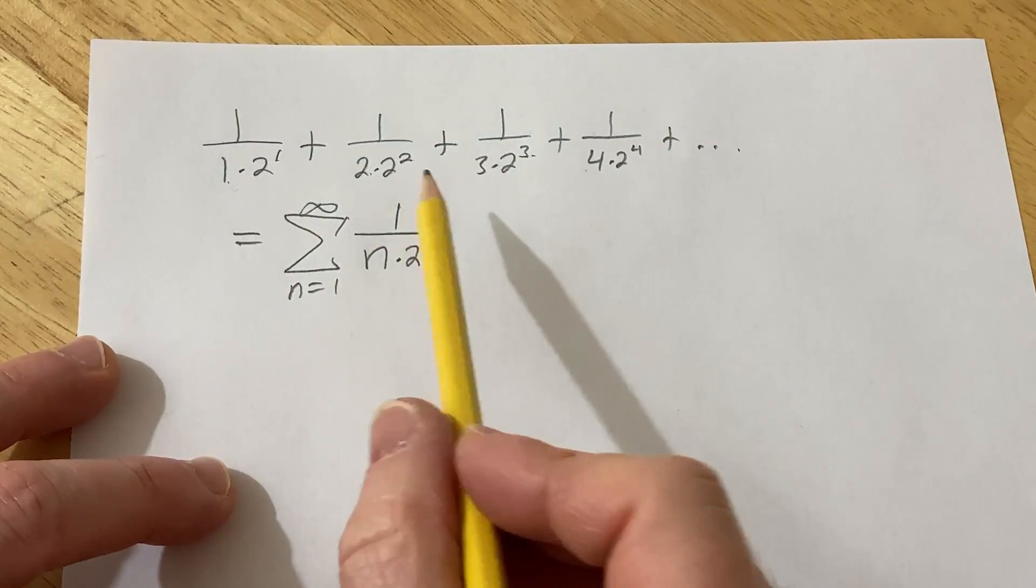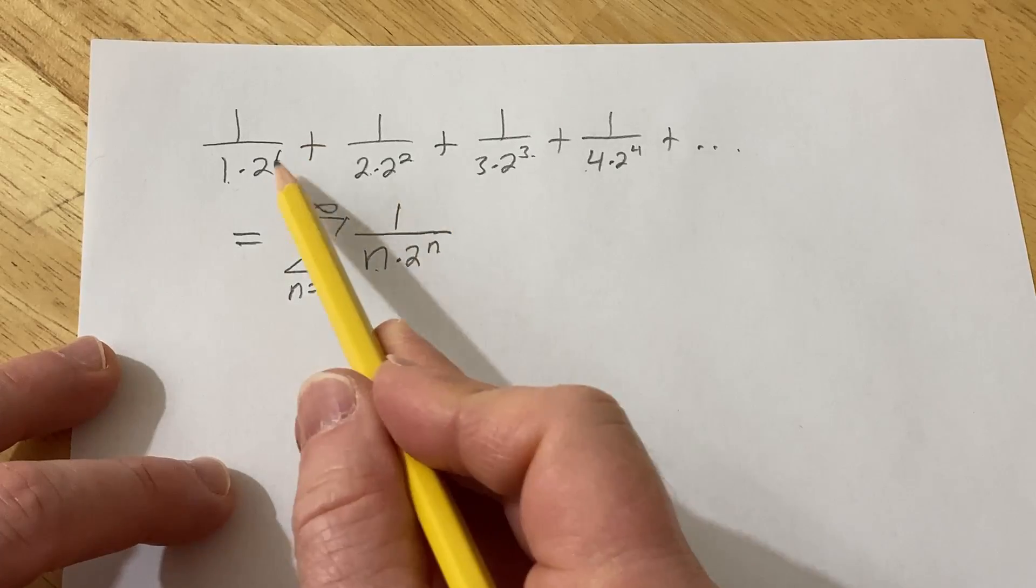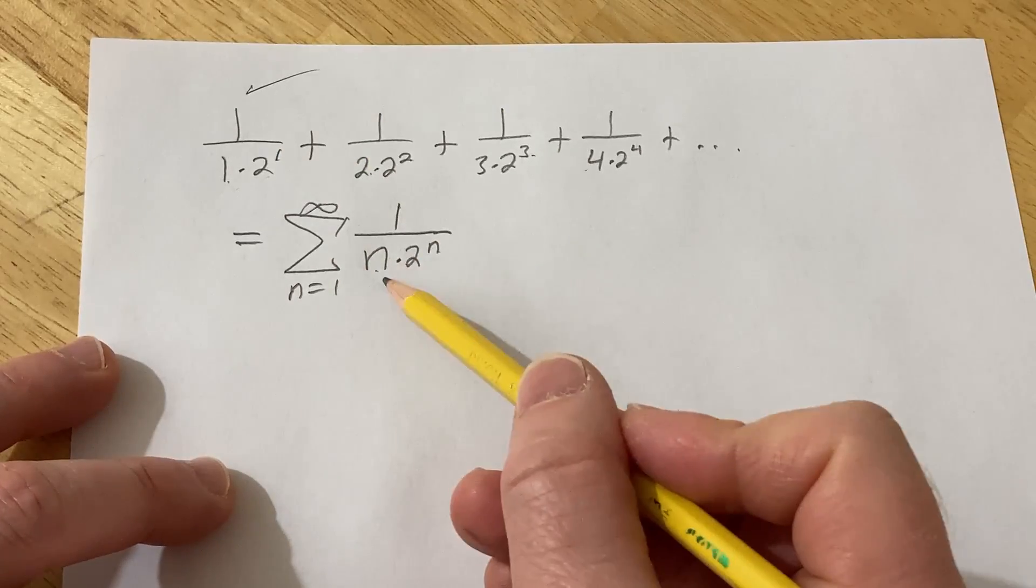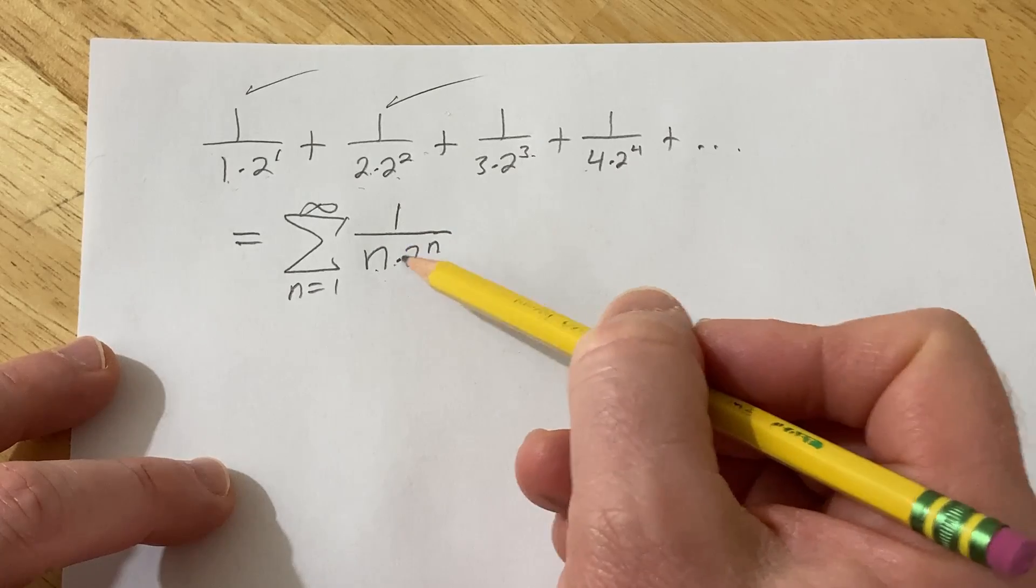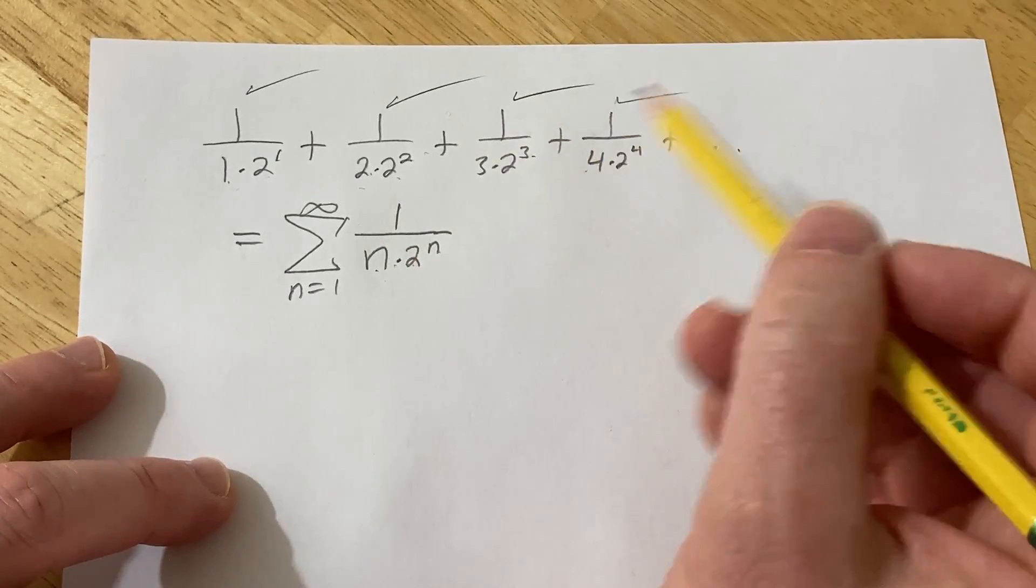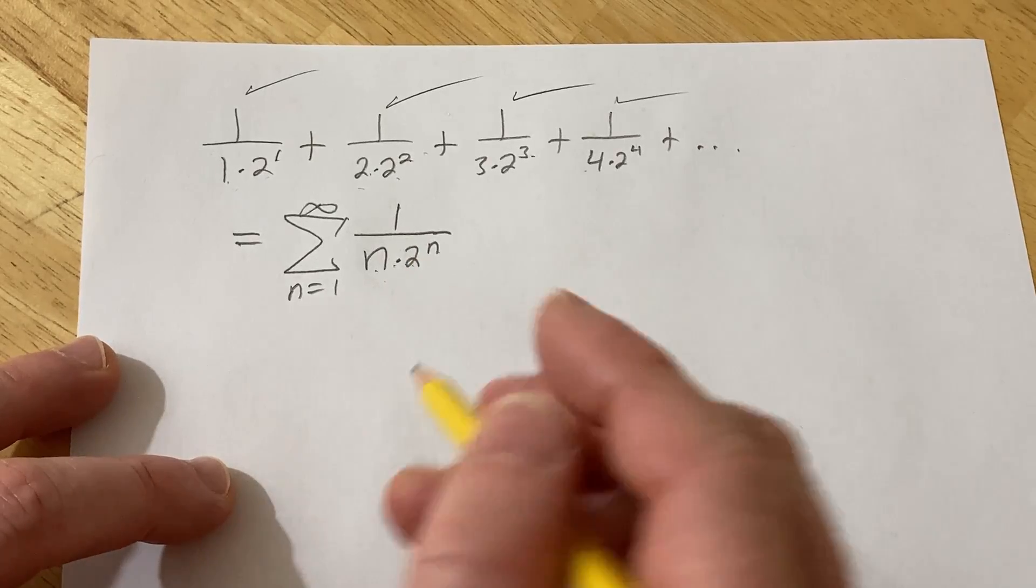And looks like it's going to be one over n times two to the n. It seems to be the series we're dealing with. And you can just check if you plug in one, you get one, two to the one. There it is. If you plug in two, you get two, two to the two. There it is. Plug in three, you get three, two to the three. Likewise with four. So all is good. So to determine whether this series converges, we're going to use something called the ratio test.